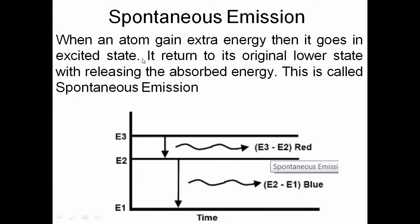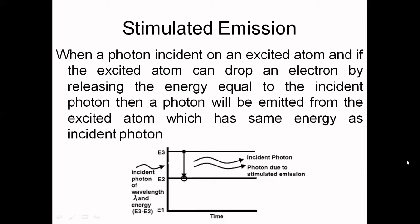When an atom gains extra energy it goes to the excited state. It then returns to its original lower state, releasing the absorbed energy — this is called spontaneous emission, and it exists in LEDs. Another process is stimulated emission. In this case, atoms also gain energy and move to the E3 state. If a photon is incident on those atoms at that time, they will release energy, and if the energy of the released electron equals the incident photon energy, then another photon will be released from that atom. This is called stimulated emission.